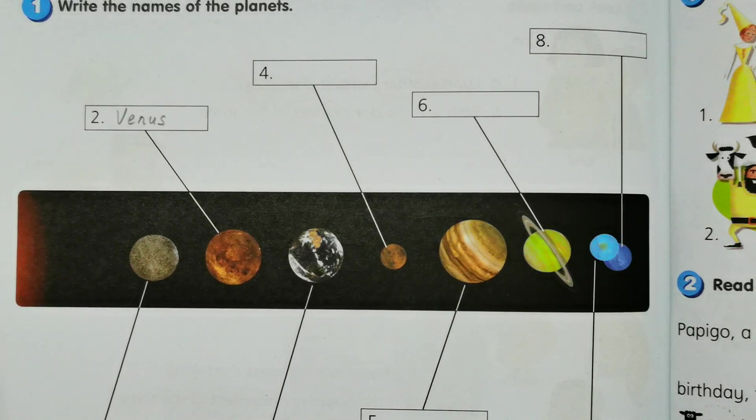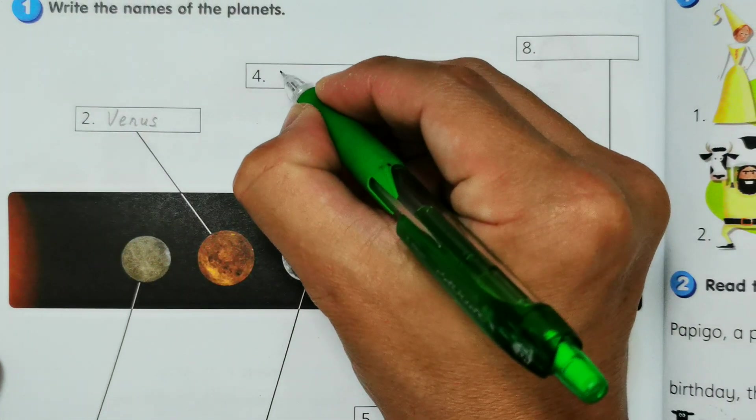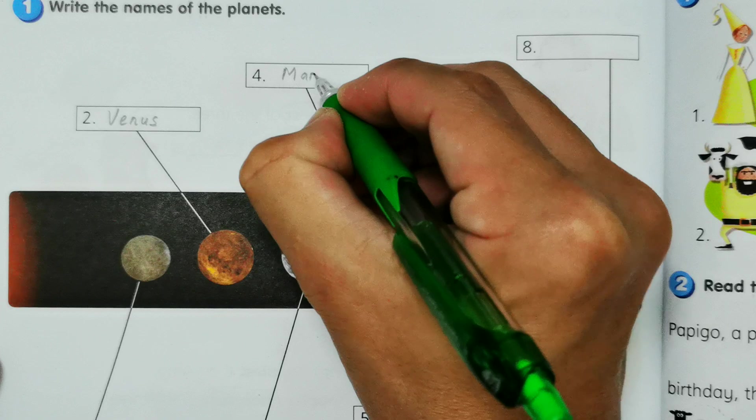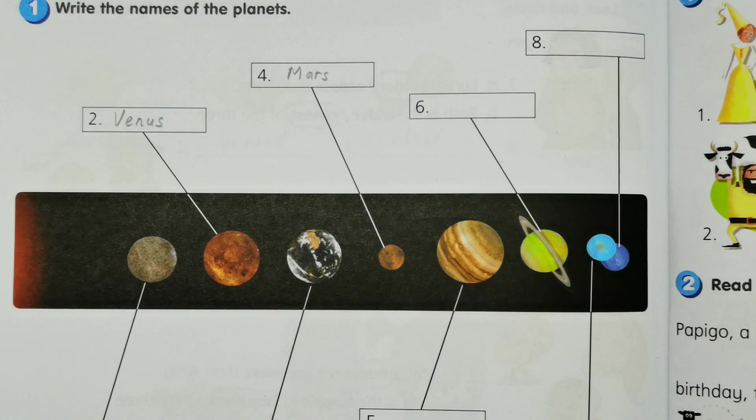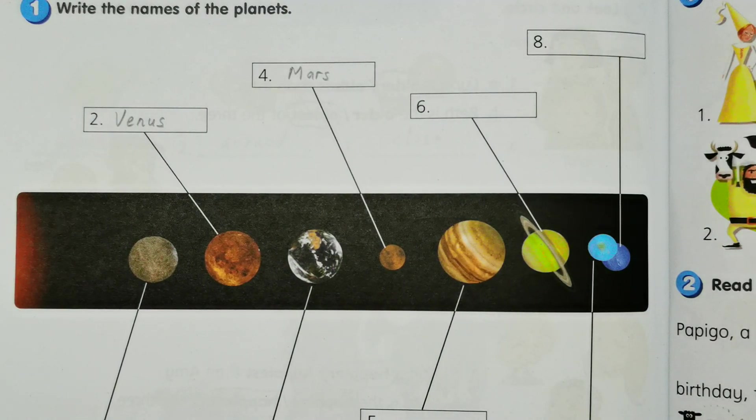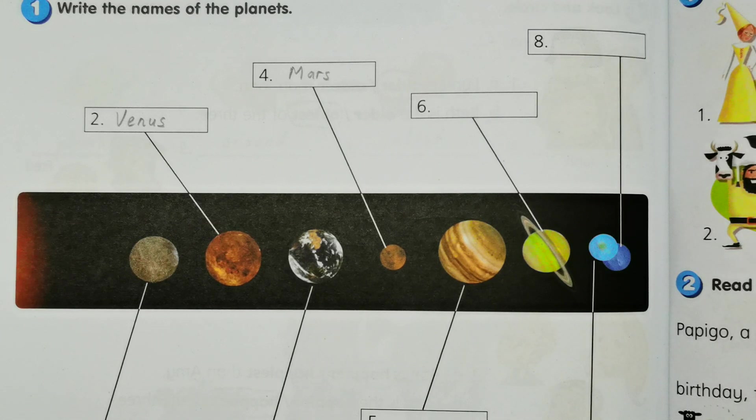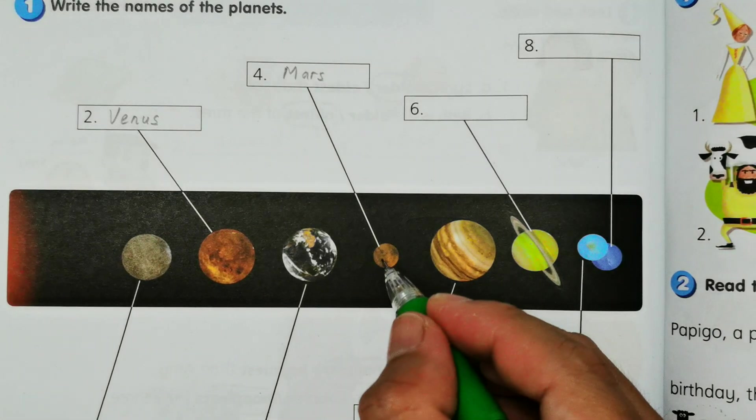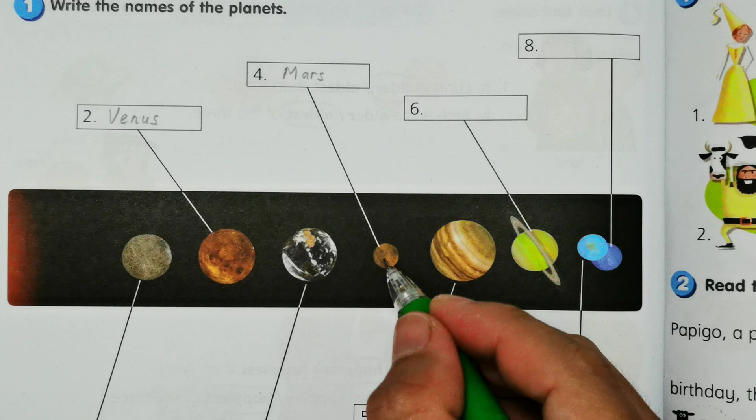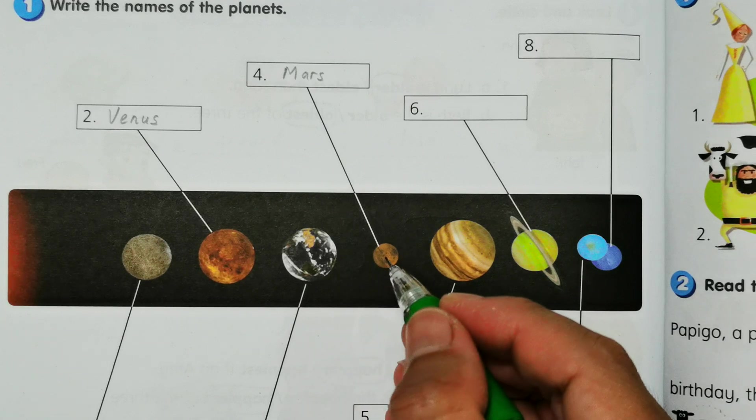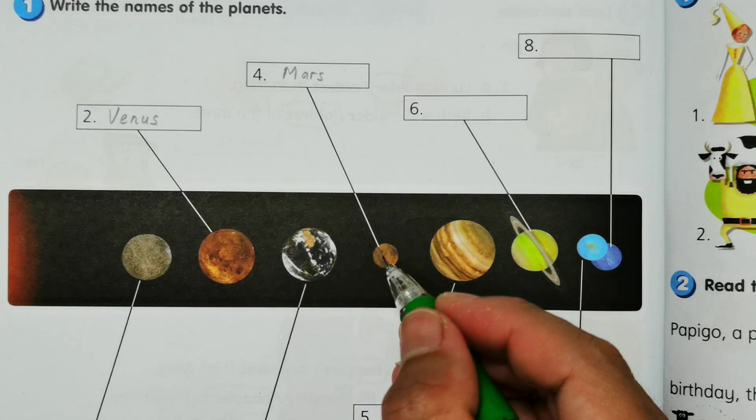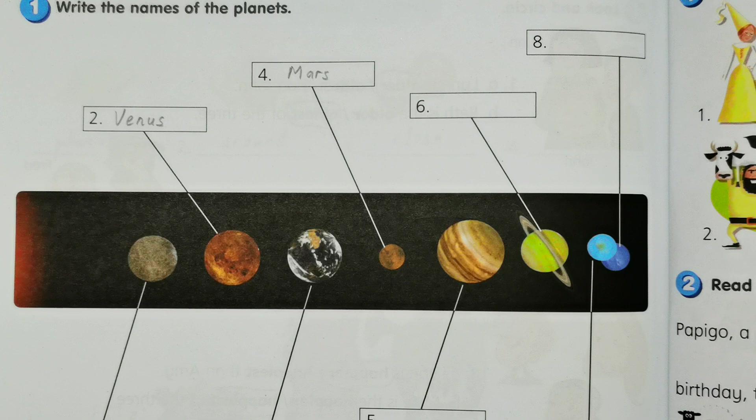And then we have planet number four, so this is Mars. So now we have entrepreneurs trying to make people live in Mars so that we can be a multi-planet species. So Mars.